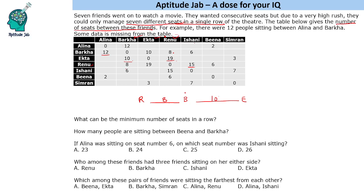Now the next person is Ishani. There are 6 people between Barkha and Ishani, and 15 between Renu and Ishani. So Ishani should be on the side of Barkha — 6 people and then Ishani. That's why this is 8 plus 6, which is 14, plus Barkha, making 15 people between Renu and Ishani.